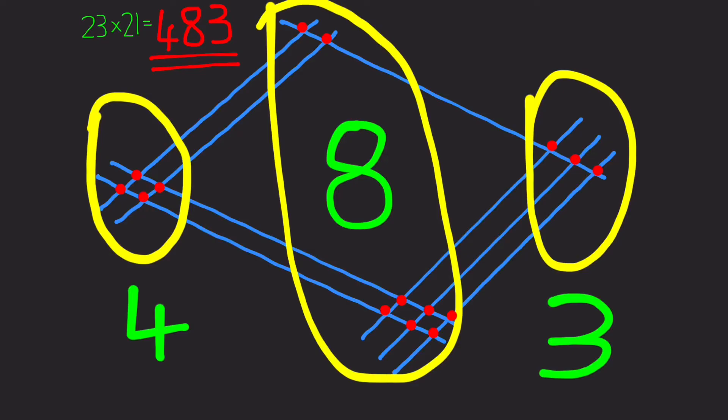So let's look at another example. This one's slightly more complicated: 35 multiplied by 23. We start in exactly the same way by taking the first number 3 and drawing three horizontal lines across the screen.